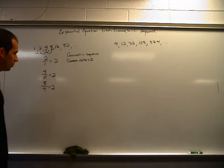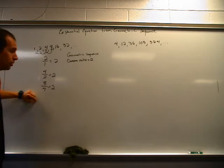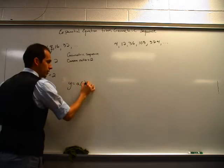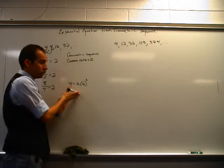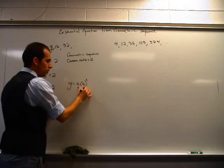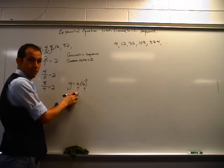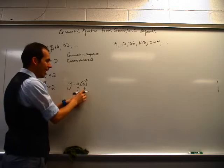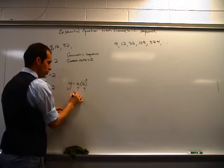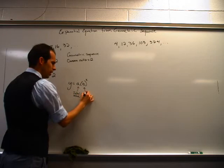All right, what does that have to do with anything? Well, because I know what the common ratio is, and I know, you should know, an exponential equation is of this form y = a(b)^x. I have 2 components that I will need. I need the initial value, and I need the common ratio. So this is the initial value, this is the common ratio.